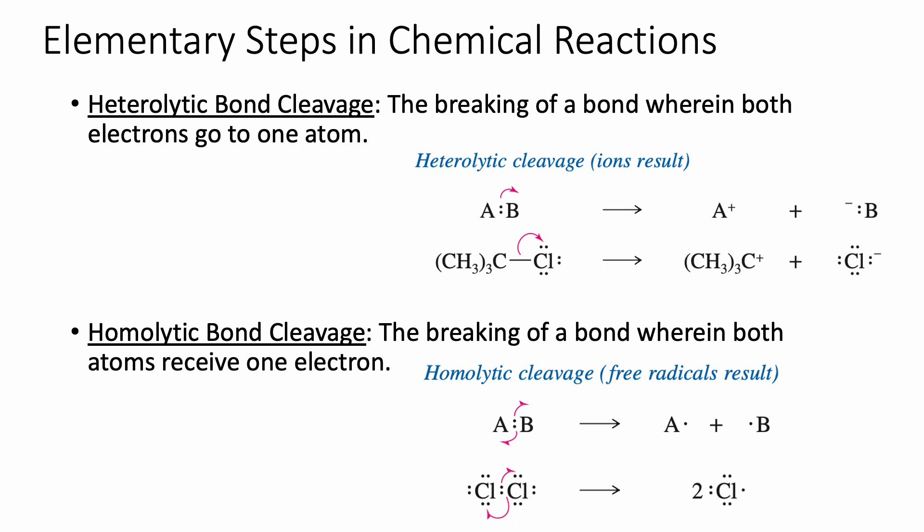In this example, atom A is bonded to atom B. When the bond breaks, the two electrons are given to B, and ions result — giving us a plus charge on A and a minus charge on B. Another example is the breaking of the bond between carbon and chlorine, which gives us a carbocation and a chloride ion.